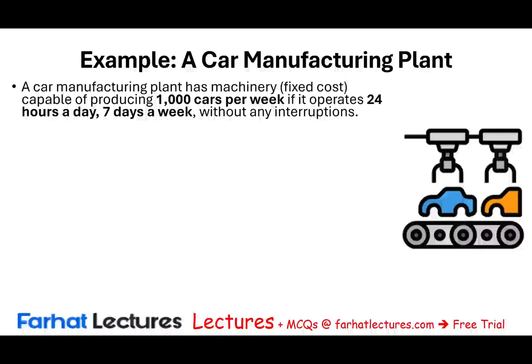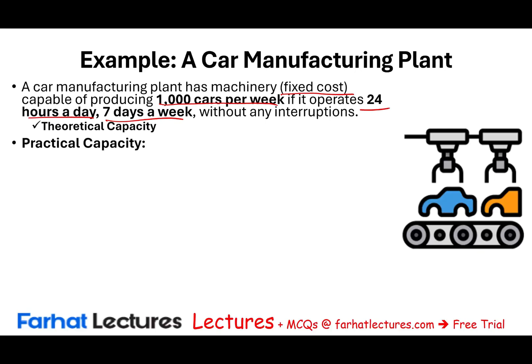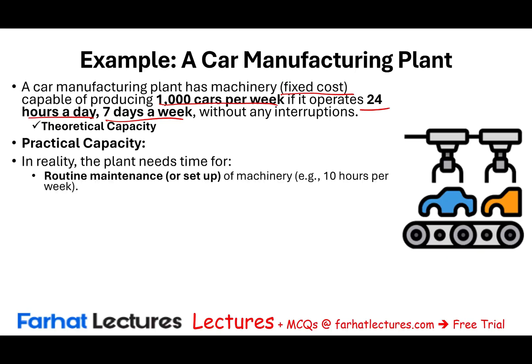Let's assume a car manufacturing plant has machinery — the fixed cost — capable of producing 1,000 cars per week if operating 24 hours a day, seven days a week without any interruption. This is the theoretical capacity. In reality, the plant needs time for routine maintenance, and sometimes you need to set up the machine — just stop, maybe change color or change the setup — which requires about 10 hours per week.